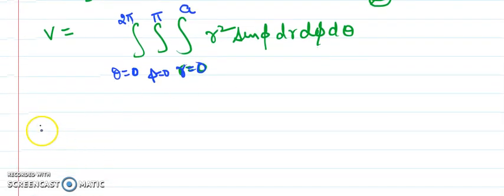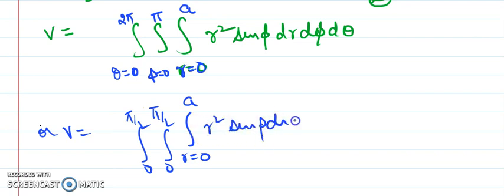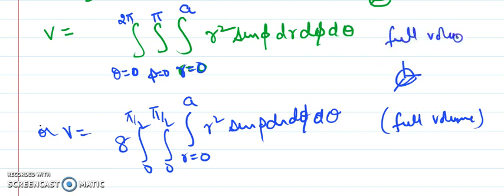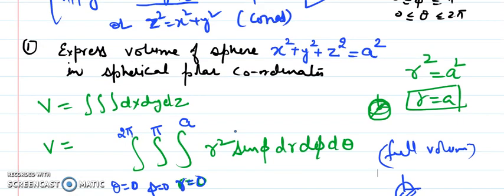Alternatively, I can write 8 times the integral over one octant: r from 0 to a, φ from 0 to π/2, θ from 0 to π/2 — this is the 1/8th part of the sphere. Multiplying by 8 gives the full volume. Both expressions represent the full volume of the sphere.